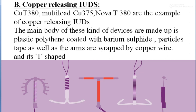Most copper-releasing IUDs have a T-shaped or T-shepherd structure. The main body of these devices is made of plastic polyethylene coated with barium sulfide. Most importantly, the arms of these devices are wrapped with copper wire — that is why they are known as copper-releasing IUDs.